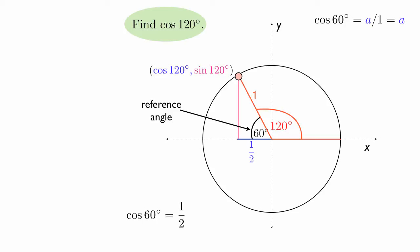So you might say the cosine of 120 degrees is 1/2. You wouldn't be correct if you said that because notice that the x value is negative. In other words, we're going 1/2 in the negative direction.